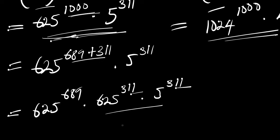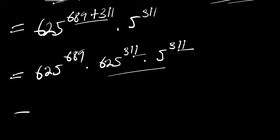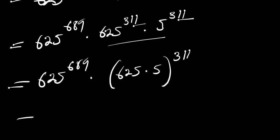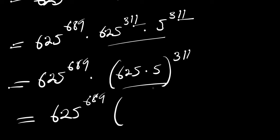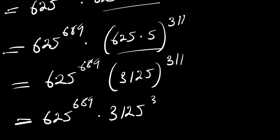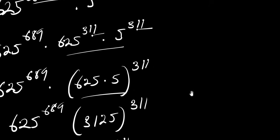Since the powers are the same, we can multiply the bases: 625^311 times 5^311 becomes (625 × 5)^311, which is 3125^311. So the first expression becomes 625^689 times 3125^311.